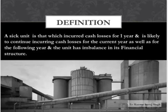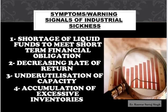Coming to the definition of a sick unit: it is one which has incurred cash losses for one year and is likely to continue incurring cash losses for the current year as well as the following year, and the unit has an imbalance in its financial structure. Now we will study various symptoms and warning signals of industrial sickness.